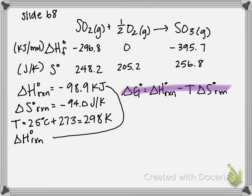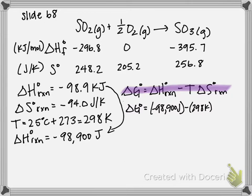The only thing we need to do is make sure that our delta H is in proper units. So negative 98.9, if we move the decimal over three spots, corresponds to negative 98,900 joules. We have to convert that in order to make sure all our units are the same for plugging into our equation. Then we get delta G is equal to negative 98,900 joules minus 298 K times negative 94 joules per kelvin.